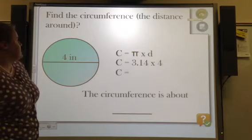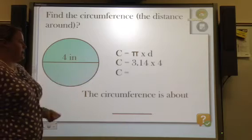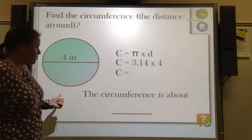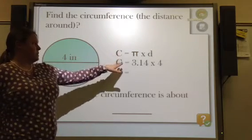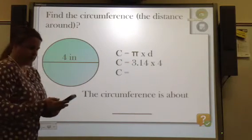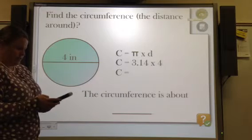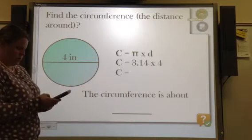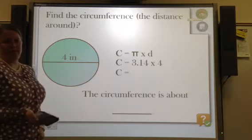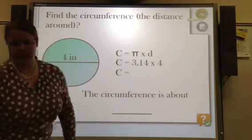Find the circumference, the distance around. So given that the diameter is 4, your job is to find the circumference. So again, circumference equals pi times diameter. So with your calculator, 3.14 times D, which is 4, equals 12.56. And that is the circumference for this problem.